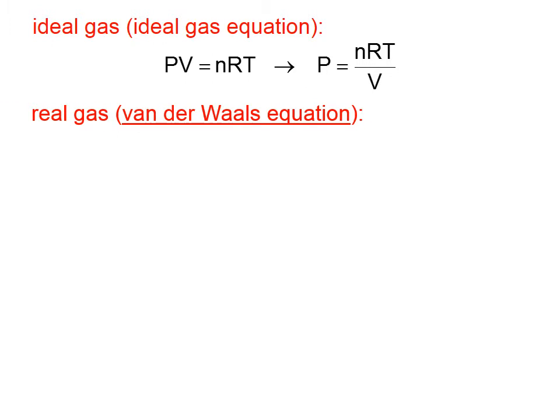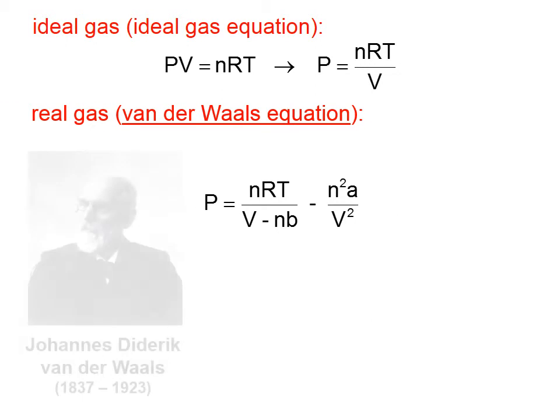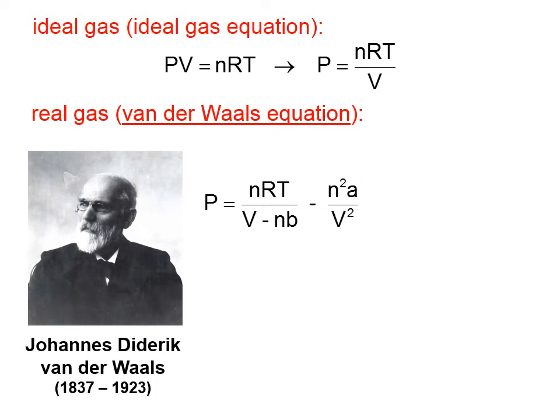An ideal gas conforms to the ideal gas equation, PV equals nRT. If we solve that for P, it's nRT over V. A real gas conforms better to the Van der Waals equation, developed by Johannes Diderik Van der Waals. And there is the Van der Waals equation. We are not going to use that equation in any calculations. We're just going to try to explain some of the new terms and how we could rationalize the existence of those terms in the equation.